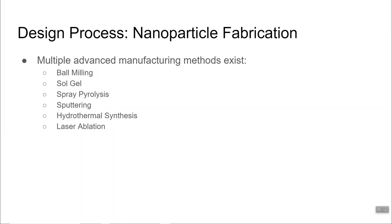Design process. In order to create a resin with the thermal and electrical benefits of nanoparticles, we need to be able to create the nanoparticles. Using advanced manufacturing technologies, we can create these tiny particles. So several methods exist such as ball milling, sol gel, sputtering, hydrothermal synthesis, and laser ablation. We will go through the basic operation of each method and summarize the disadvantages and advantages of each.